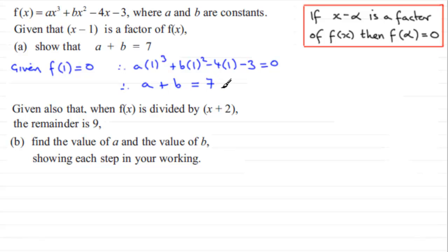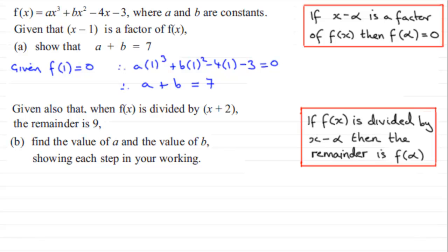Okay, now in the next part we're given also that f of x is divided by x plus two and the remainder is nine. We've got to find the value of a and the value of b, showing each step in our working. To do this, you've got to be familiar with the remainder theorem. The remainder theorem is this: if f of x is divided by x minus alpha, then the remainder is f of alpha.